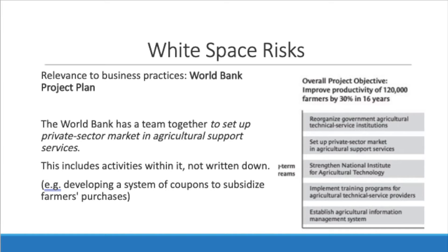As for how this is relevant to today's business practices, the article gives the example of the World Bank project plan. The goal was to improve productivity of farmers, so they set up groups and teams. One team was called to set up a private sector market and agricultural support services, which is shown in the image on the right. This is a white space risk because activities within it are not written down — for example, developing a system of coupons to subsidize farmers' purchases is within this group but not written down anywhere.